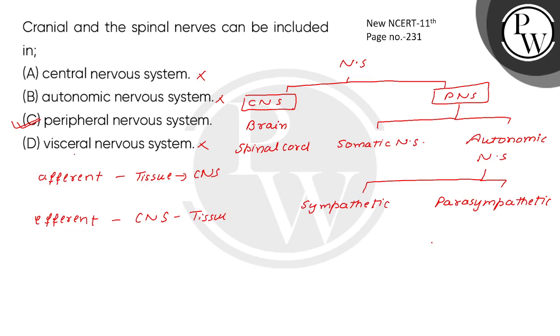Ganglia, plexuses, and impulses travel from central nervous system to visceral and visceral to central nervous system. Here is the correct option. Regarding information: New NCERT Class 11, page number 231. Thank you.